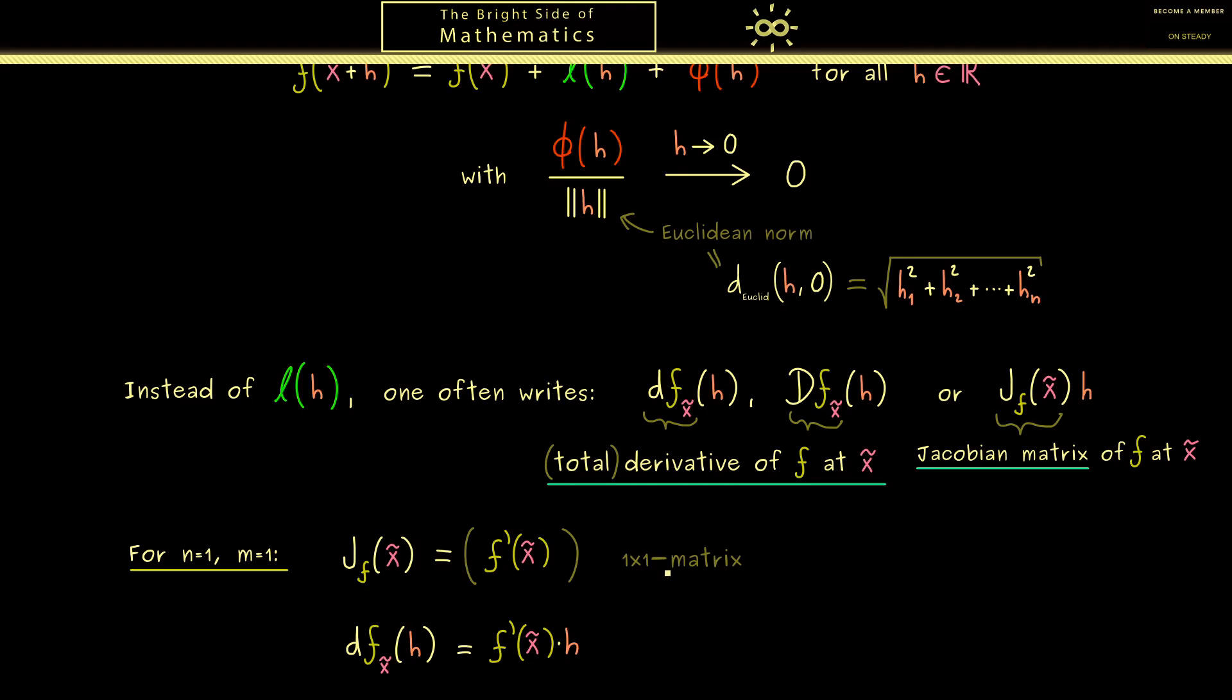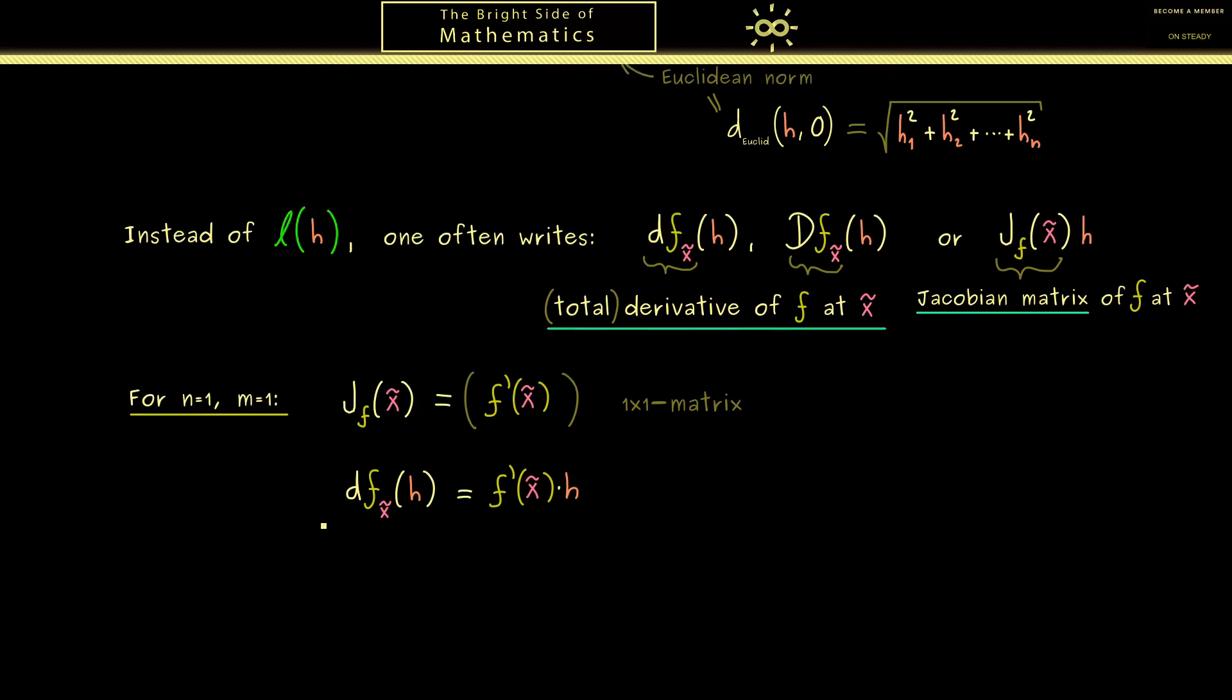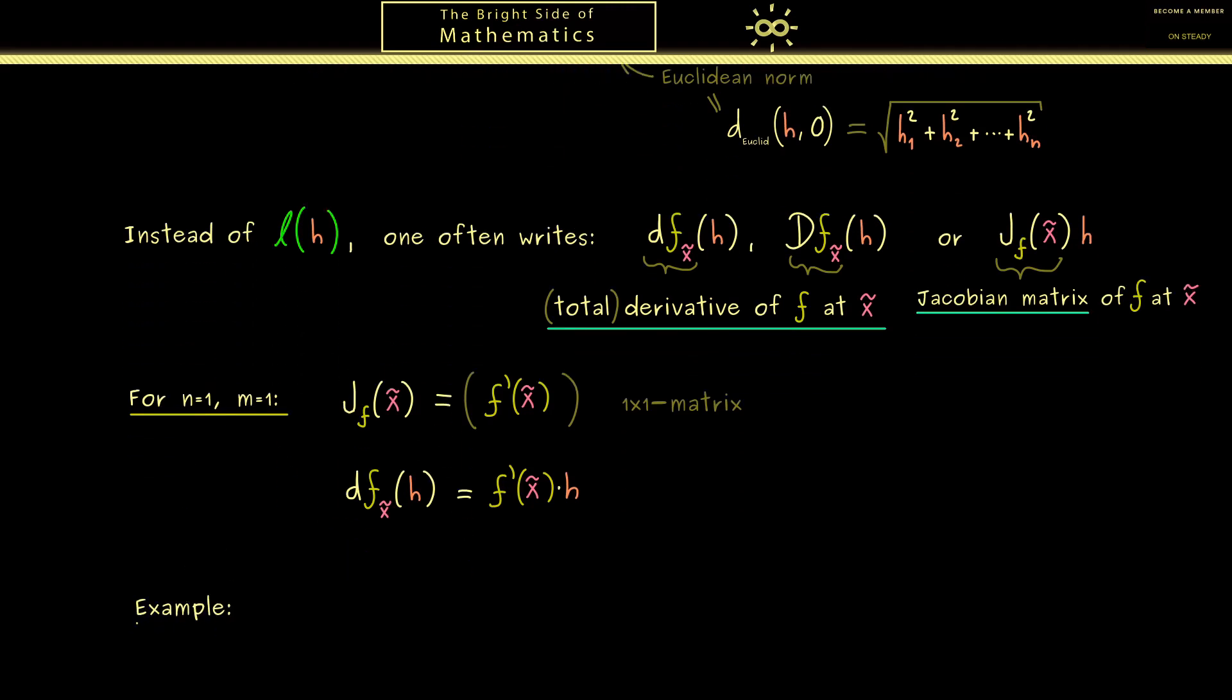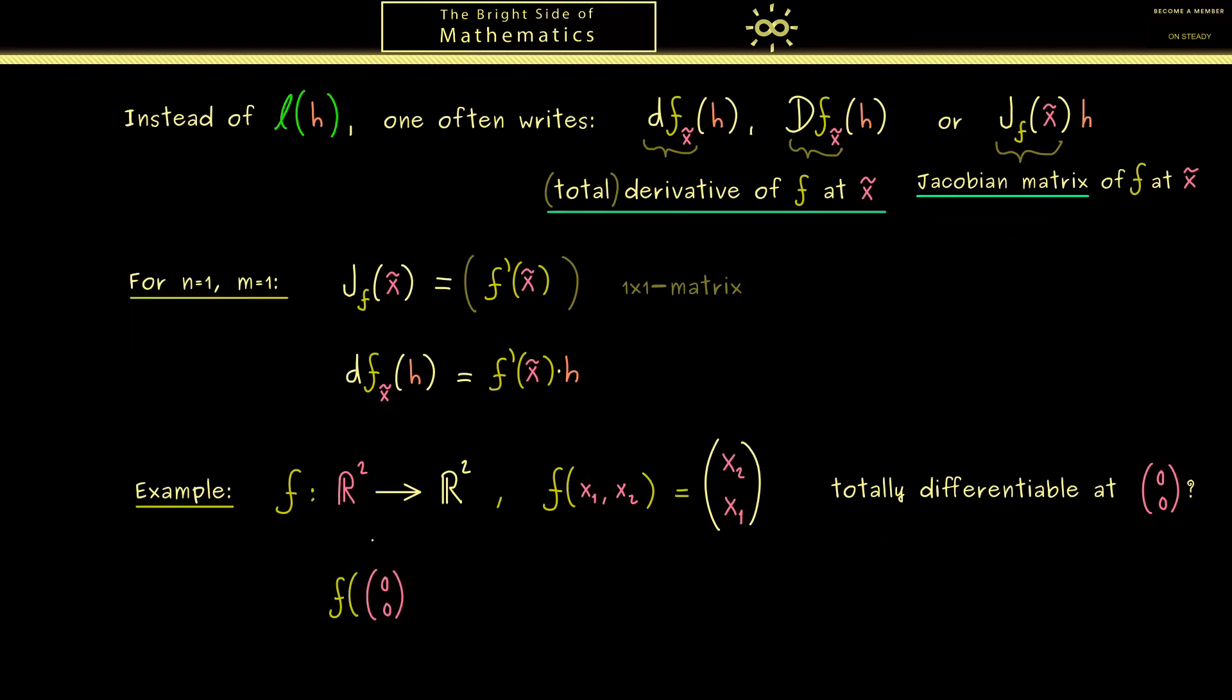Therefore I would say let's immediately go to a two dimensional example. Which means now n and m should both be 2. Hence the function f goes from R^2 into R^2. Of course the function here should not be so complicated, so let's say it flips the two components. And now I want to ask the question: is this function totally differentiable at 0? In other words, we ask do we have a linear approximation there? And in order to answer this, we look at f at x tilde plus h, which now also has two components h1 and h2.